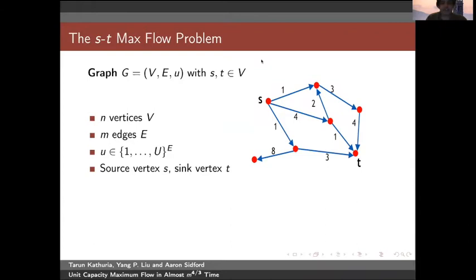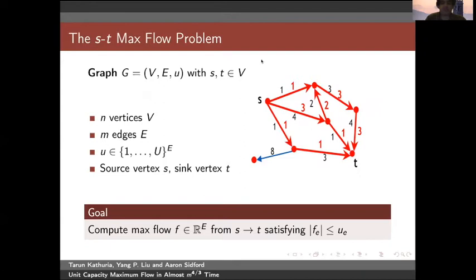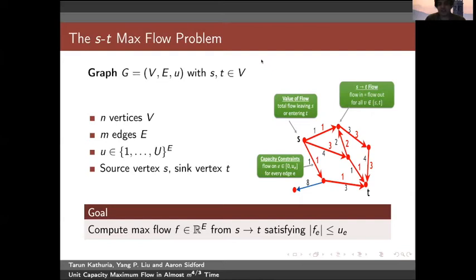So what is a max flow problem? We have a graph G with n vertices and m edges, and each edge has a capacity U, which is an integer from 1 to capital Q. There are two special terminal vertices, a source vertex s and a sink vertex t. Our goal is to find the maximum flow from s to t while ensuring that the flow on any edge is not more than its capacity, and that flow in equals flow out for all non-terminal vertices.